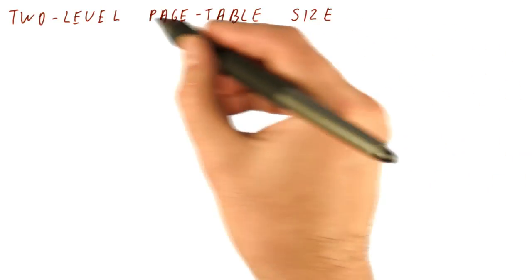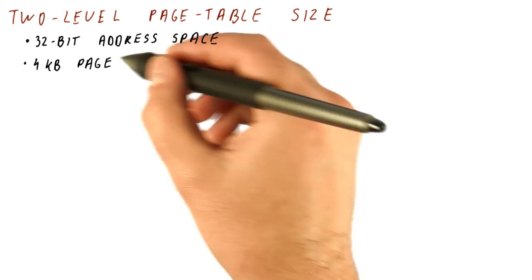So now let's talk about how big the two-level page table gets. Say we have a 32-bit address space and a 4 kilobyte page.